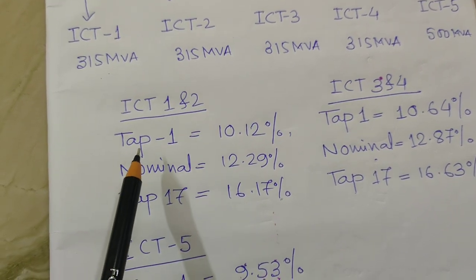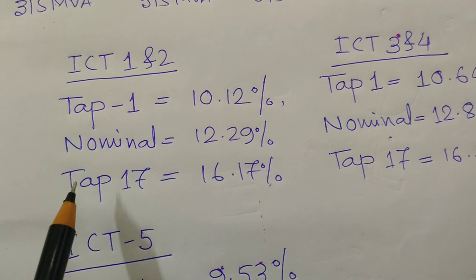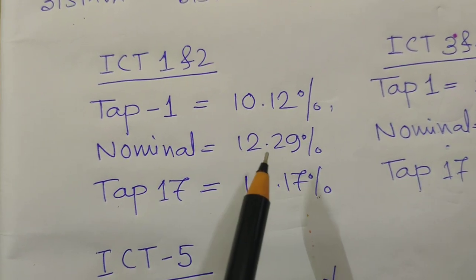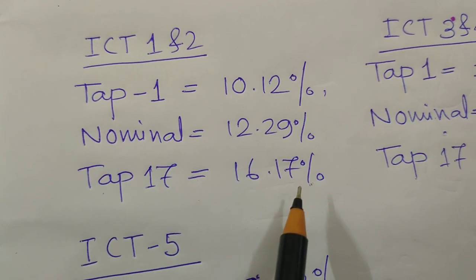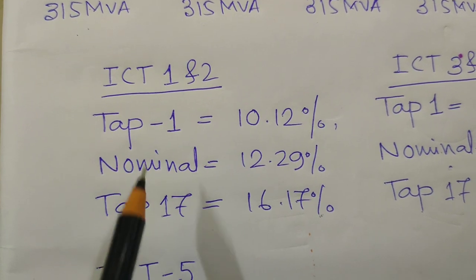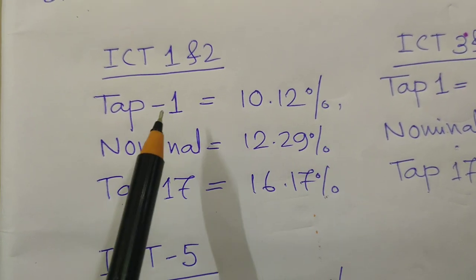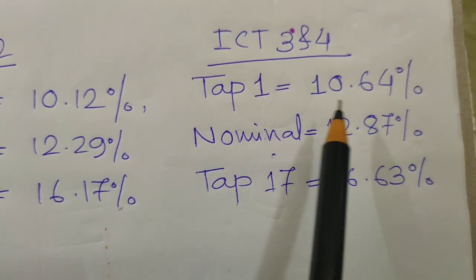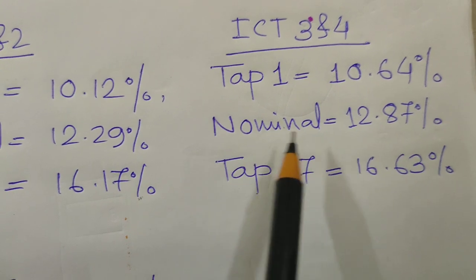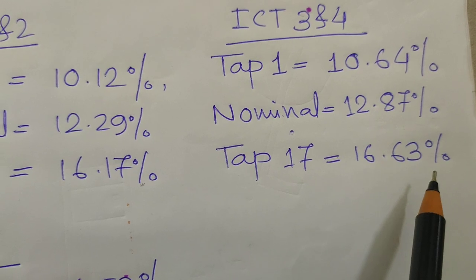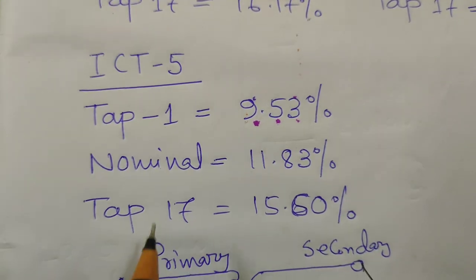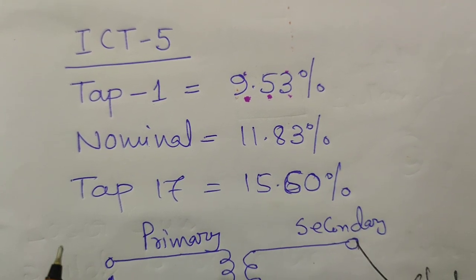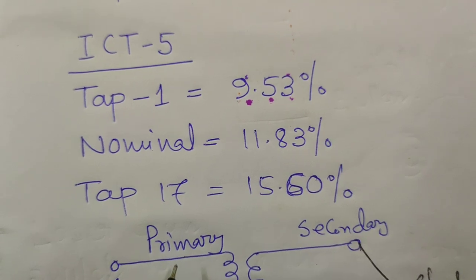ICT 1 has percentage impedance at tap 1 of 10.12%, nominal tap 12.29%, and tap 17 of 16.17%. ICT 1 and ICT 2 are the same transformer, so both have the same percentage impedance values across tap 1, nominal, and tap 17. For ICT 3 and 4, tap 1 is 10.64%, nominal is 12.87%, and tap 17 is 16.63%. For ICT 5, tap 1 is 9.53%, nominal is 11.83%, and tap 17 is 15.60%.